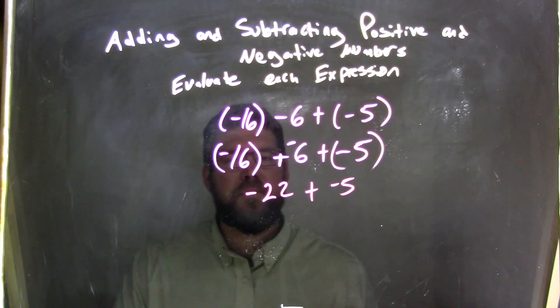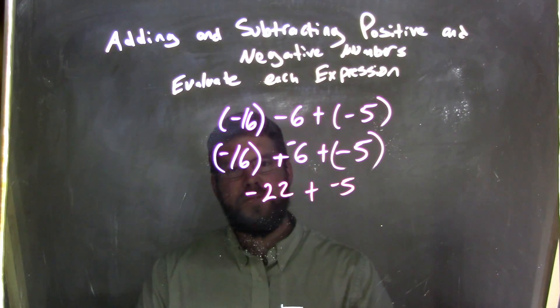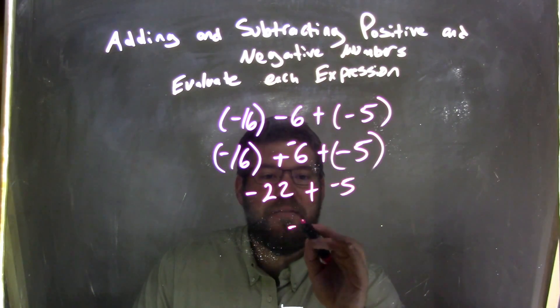Negative 22 plus negative 5. 16 plus 6 is 22, so we keep that negative: negative 22. And negative 22 plus negative 5 comes out to be a more negative number, which is negative 27.